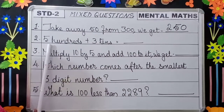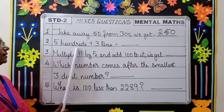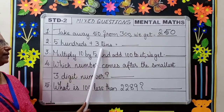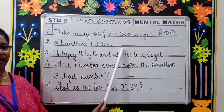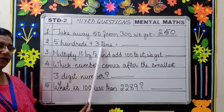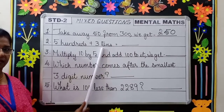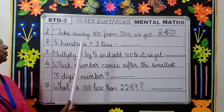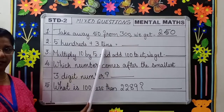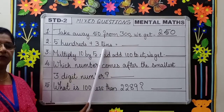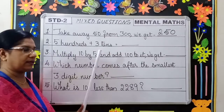Moving to the next question. Five hundreds plus three tens is equal to dash. Three tens are 30. Now you will have to add 500 to 30. The answer is 530.